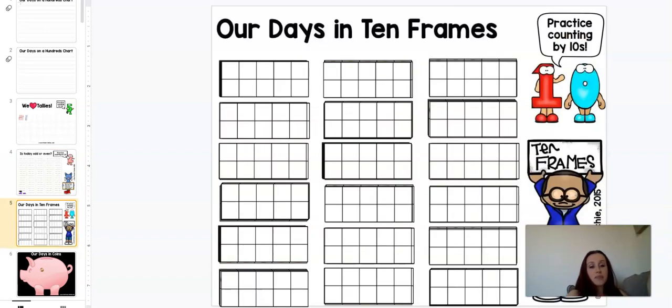Next up, we have ten frames. So you're just going to grab a ten frame and press delete, and your kids are going to start building ten frames. So on the first day of school, we have one red circle in there. Tomorrow, we're going to grab that same spot, delete, and now we're going to make two red circles. We're going to keep going like that throughout the year.